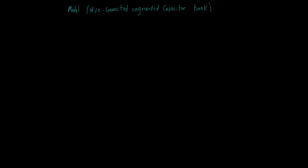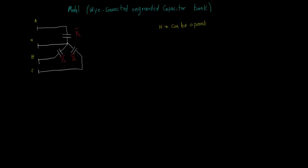Now, let's analyze the model of a Y-ungrounded capacitor bank. In this case, we have nodes A, B, C, and the neutral, which can either be connected to another conductor, for example the neutral conductor of a line, or be left open. The voltage at the center node is not zero anymore; we will name it as Vn. Then, the voltage across the branch connected to phase A, for example, will be Van. There are four injected currents: Ia, Ib, Ic, and In.